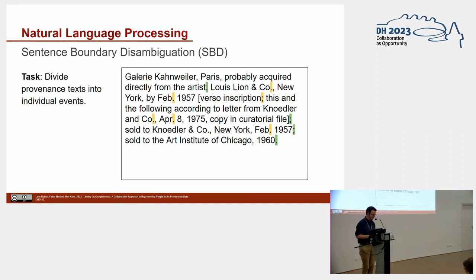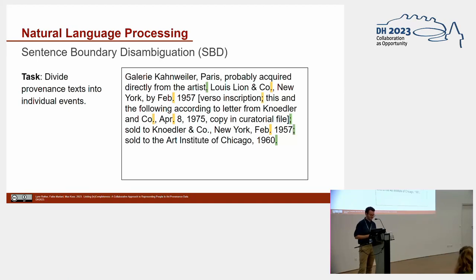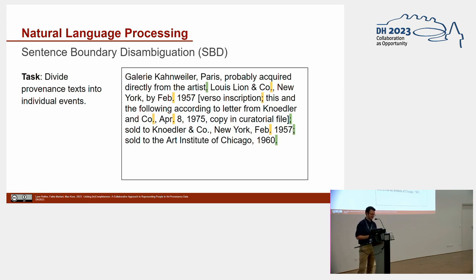We have successfully experimented with event extraction from provenance text by approaching the problem with two natural language processing tasks. The first task is sentence boundary detection or disambiguation, SBD. The purpose of SBD is to identify and disambiguate punctuation marks that separate sentences in a text. According to AAM guidelines, events in a provenance text may be separated by a semicolon or a period, depending on whether the change of ownership is direct or not. However, markers such as periods can be ambiguous — for example, a period indicating an abbreviation may or may not mark the end of a sentence.